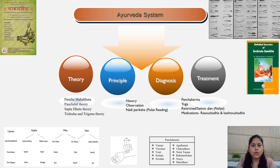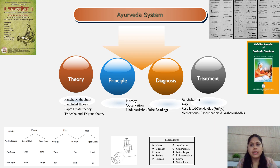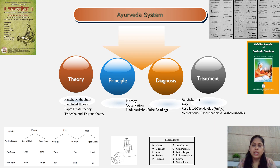Pulse reading, or Nadi Pariksha, is the most important diagnostic tool as per Ayurvedic texts. Based on this, various treatments are offered by Ayurvedic physicians called Vaidyas — either Panchakarma, Yoga, a restricted Sattvic diet, or medications, especially Rasa Aushadis or Kashta Aushadis. Kashta Aushadis are specifically made from various plant medicines, highlighting the importance of medicinal plants in India.